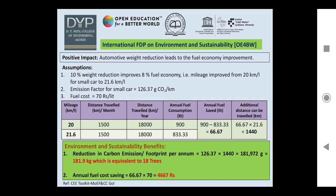In tabulated format, the first row shows values for 20 km/litre mileage and the second row for 21.6 km/litre. With the same distance travelled, the reduced-weight car consumes 66.67 litres less fuel, and with the improved mileage can travel an extra 1,440 km. The environment and sustainability benefits are: carbon footprint reduction of 181.9 kg per annum — equivalent to 18 trees — and annual fuel cost savings of ₹4,667 (66.67 litres × ₹70 per litre).